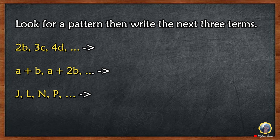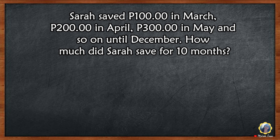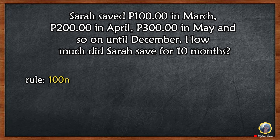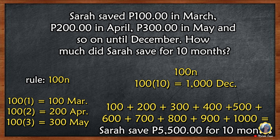Look for a pattern, then write the next 3 terms. Let's practice. Sarah saved 100 pesos in March, 200 pesos in April, 300 pesos in May, and so on until December. How much did Sarah save for 10 months? The rule is 100n. Sarah saved 5,500 pesos for 10 months.